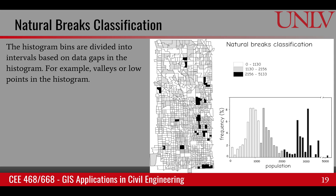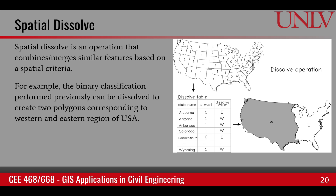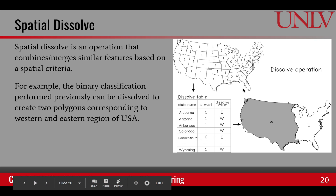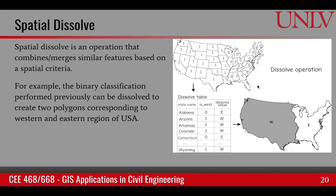The other topic in this learning objective is the dissolve operation. Dissolve is an operation that combines or merges similar features based upon a spatial criteria. For example, using the binary classification based upon the Mississippi River, we can dissolve all features with value 1 into a single polygon and all features with value 0 into another polygon. This process results in only two polygons — we have dissolved all the little features into a single feature.